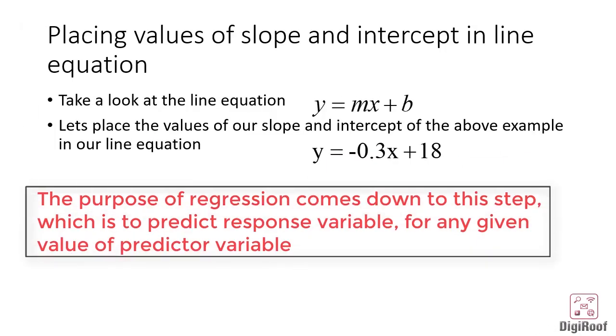Now that we have the slope and intercept value, we can place these values in the line equation and get the value of response variable for any given value of the predictor variable. Lastly, we are going to see how to make the regression line or the best fitting line using the slope and intercept value we just calculated.